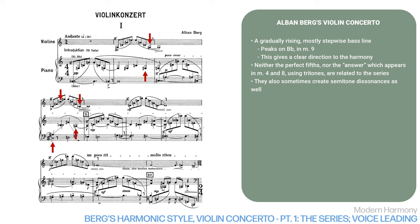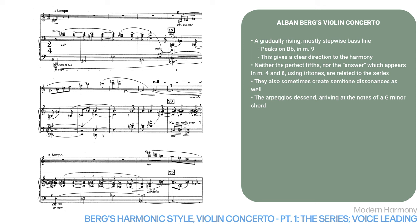In measures 9 to 10, the arpeggios descend, arriving at the notes of a G minor triad in the low register. But the solo violin holds an E-flat, which is dissonant with the D in the G minor chord in measure 10. So if we had to deduce the series from this beginning, it would certainly not be the one Berg is actually using.